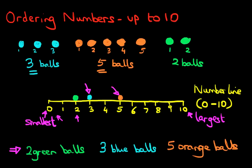And that is how we order numbers up to ten. We drew pictures as an example with how many balls there are, but you can do this when you simply have just the numbers. You draw the number line, plot it on the number line, and then you can start working through which is the smallest up to which is the largest.